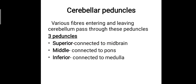The cerebellar peduncles are various fibres entering and leaving the cerebellum. These bundles of fibres form three peduncles or stalk-like holding points: the superior cerebellar peduncle, middle cerebellar peduncle, and inferior cerebellar peduncle. The superior cerebellar peduncle connects the cerebellum to the midbrain, the middle one connects to the pons, and the inferior one to the medulla. These important stalks connect the cerebellum to the brainstem.